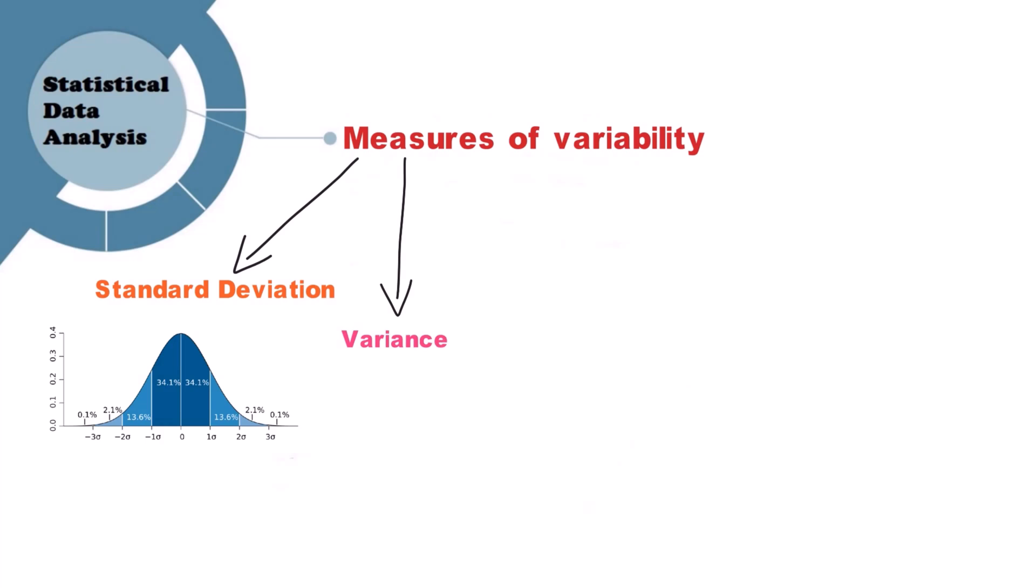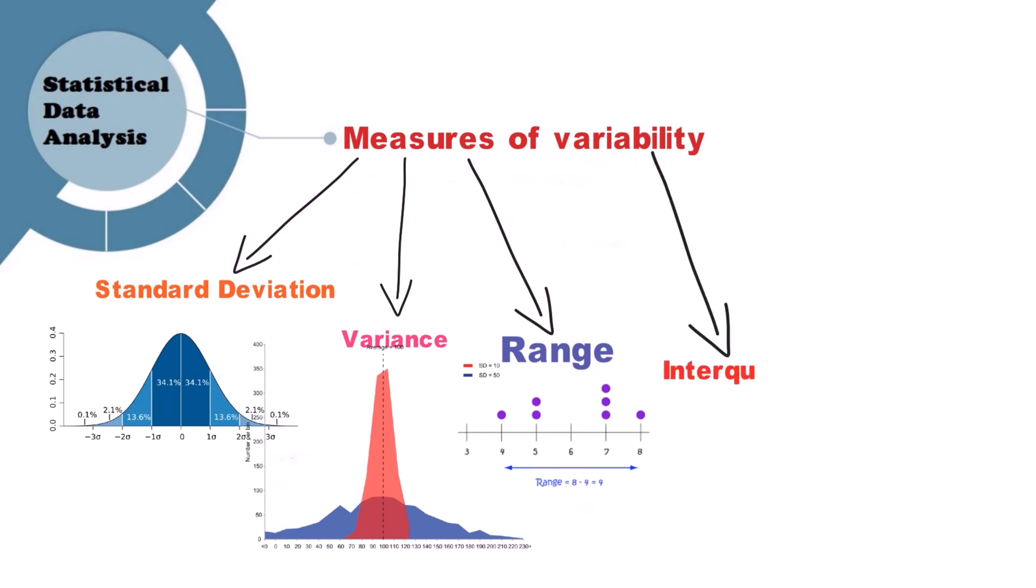Variance: Variance is the square of the standard deviation. Range: The range is the highest value subtracted from the data set's minimum value. Interquartile range: Interquartile range is the highest value minus lowest of the data set.